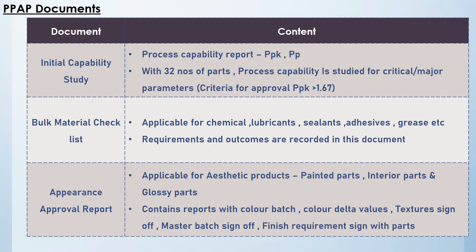The eleventh document is the initial capability study. Similar to MSA, critical and major parameters are collected and verified with a minimum of 32 numbers. The verification data is driven through statistical tools and process capability is calculated. Process capability should be more than 1.67. This gives confidence to the customer that the process will deliver consistent results in the future.